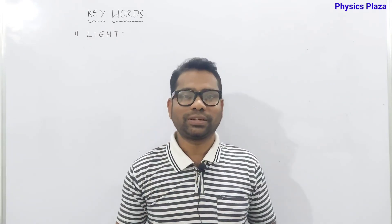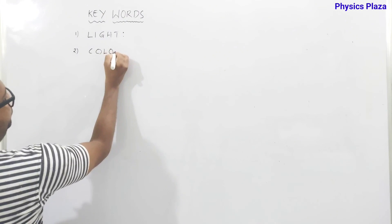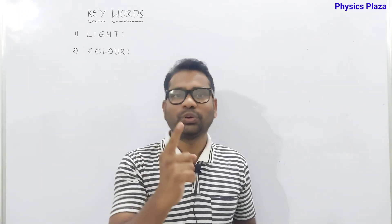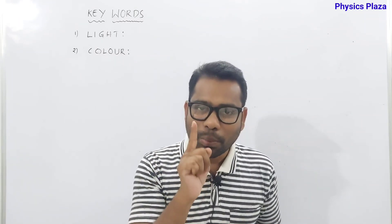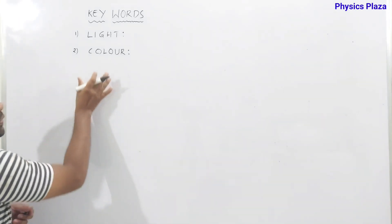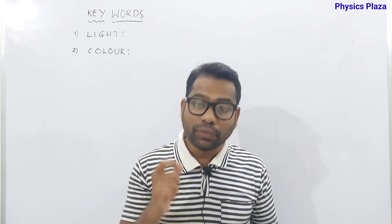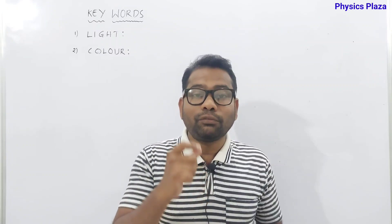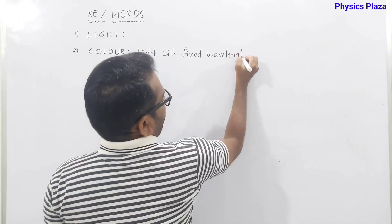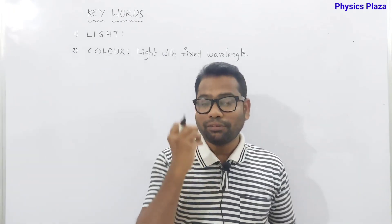The second term is color. What is a color? Color is nothing but light with a fixed wavelength. It's very important: the light with a fixed wavelength is called color.